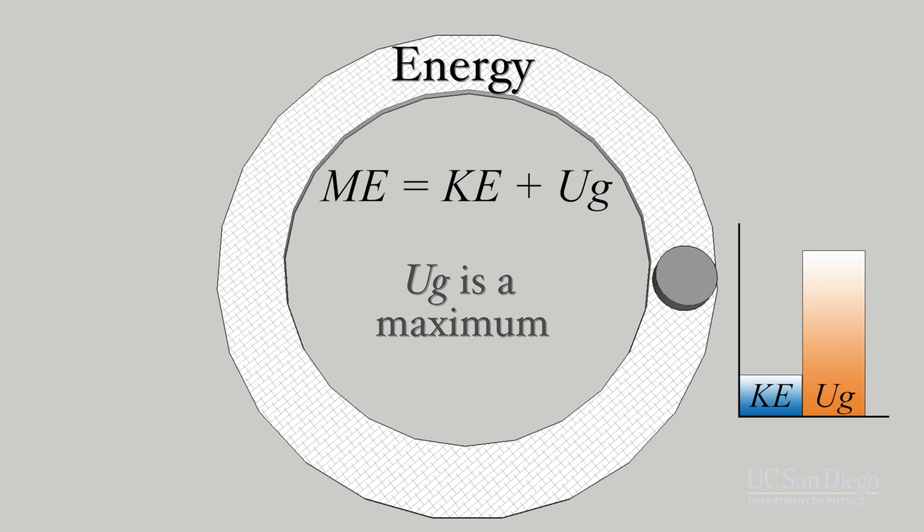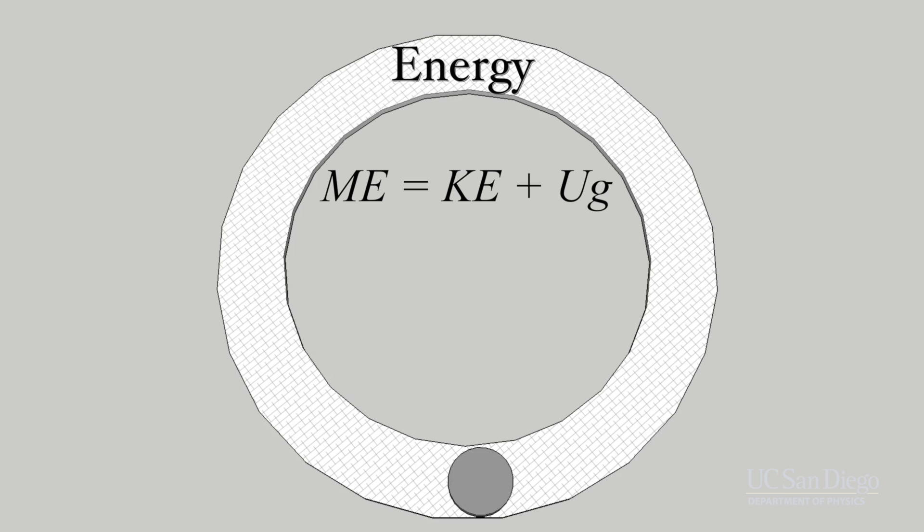Now let's consider moving back down to the lowest point, where we know the speed is greatest, and ask the same questions. Is the kinetic energy at this point minimum or maximum for the system?